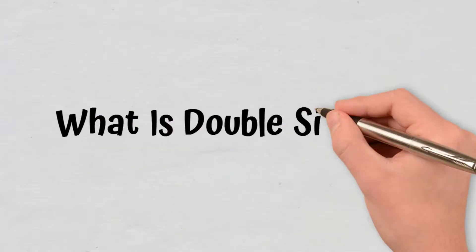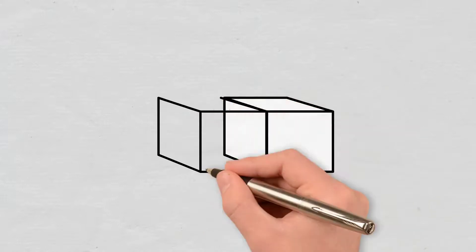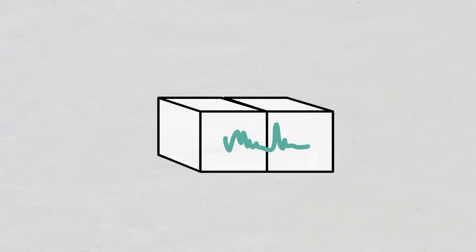What is double-signing? Another behavior that triggers slashing is double-signing, which takes place when a validator signs two blocks simultaneously.